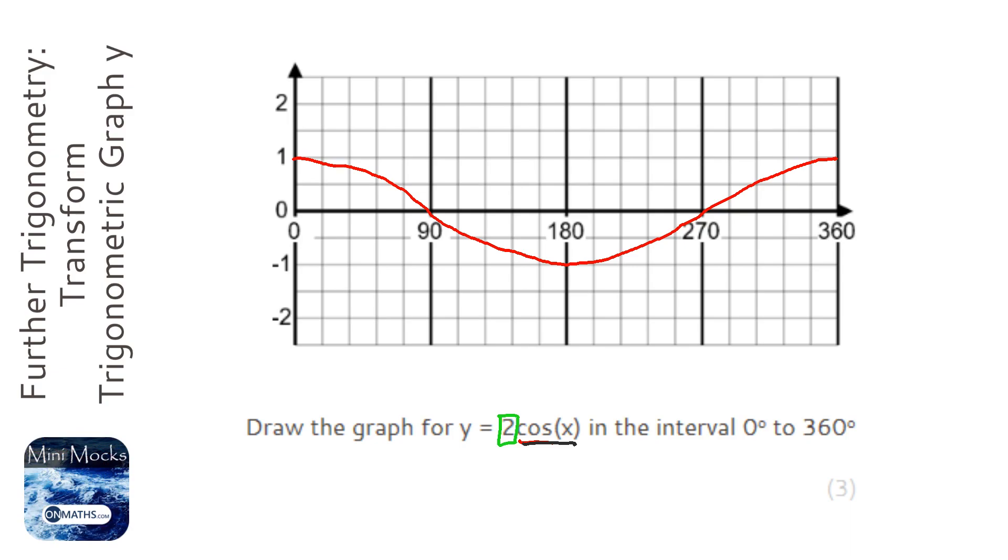Instead of one, you're going to type in cos zero into your calculator. It's going to come out of one, and then you're going to times it by two, so we're going to start the graph here.